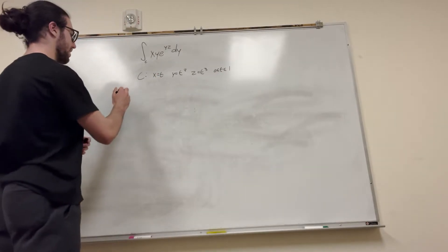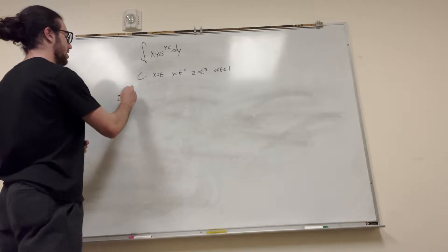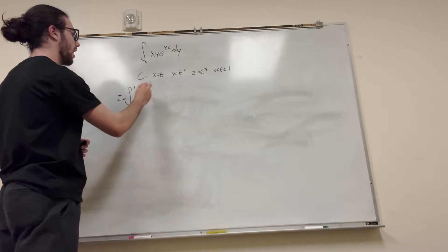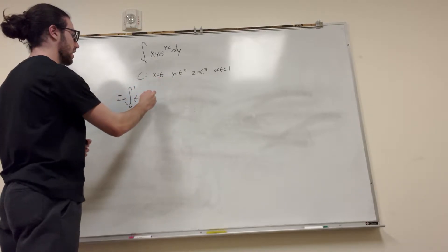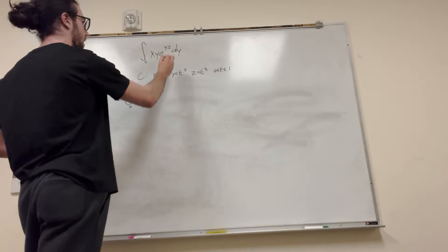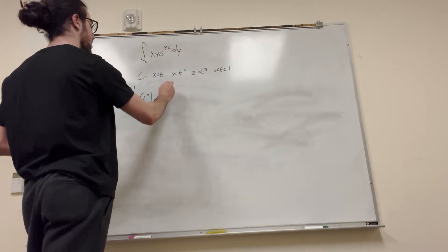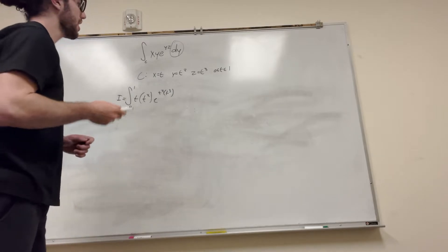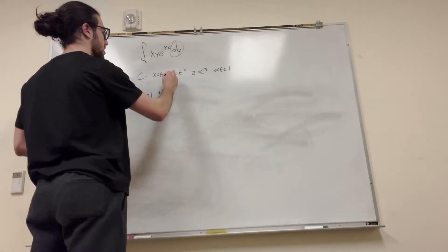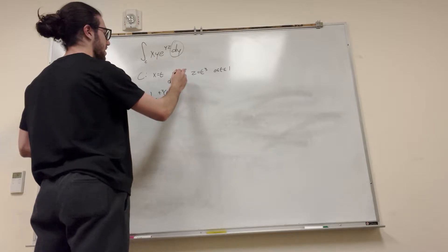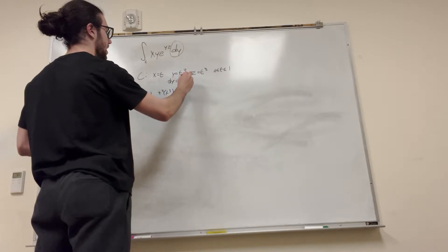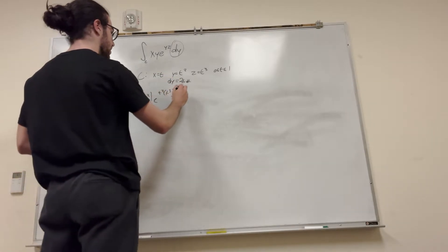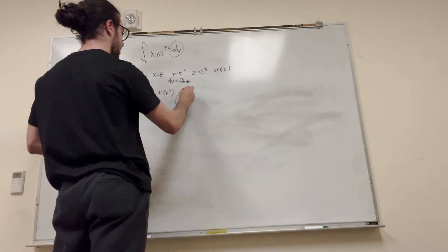So what we can do is say this integral is actually the same as t goes from 0 to 1. So x is equal to t, y is equal to t squared, and then it's going to be e to the t squared, because y. And then z is equal to t to the third. Now, we have this dy at the end — what do we do with the dy? Well, we have it right here: y is equal to t squared, so dy is equal to 2t dt. Now we can just replace this dy with 2t dt.